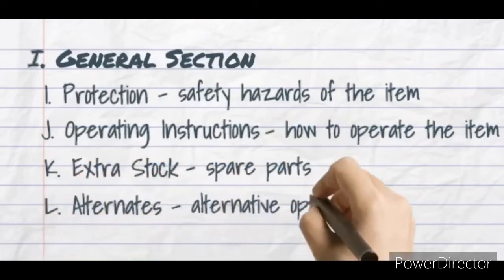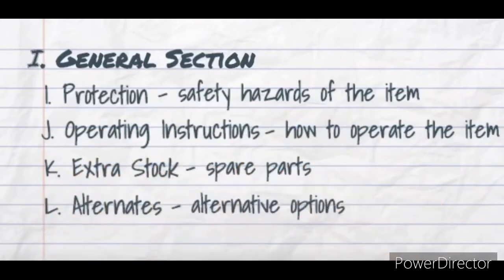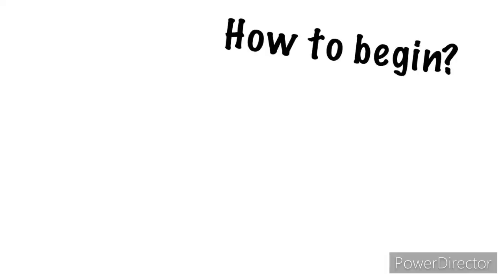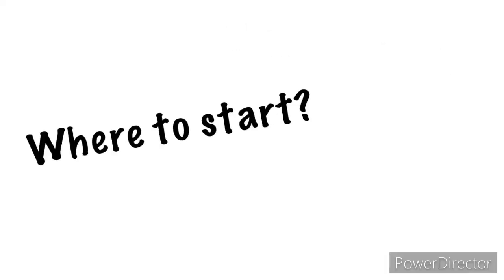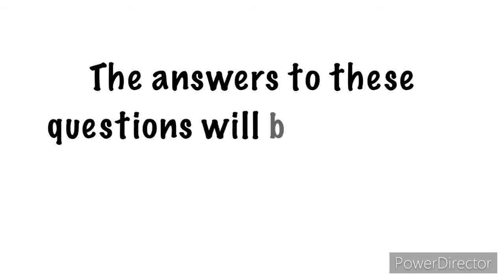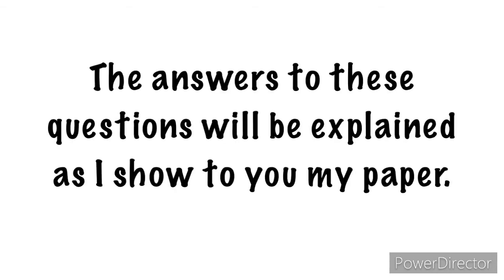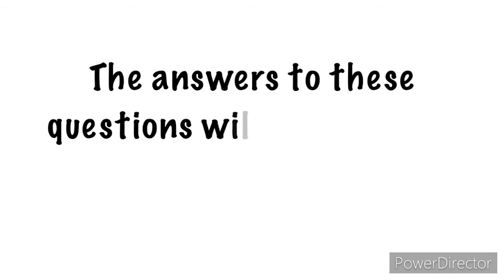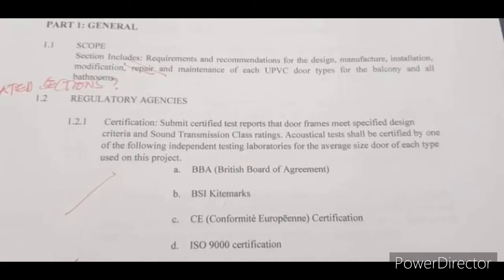Eleventh is extra stock — this is where spare parts, extra tiles, or wall coverings are indicated. Twelfth is alternates — this is the area where alternative options are mentioned aside from preferred brands. So how to begin, where to start, and what to input — the answers to these questions will be explained as I show you my paper.